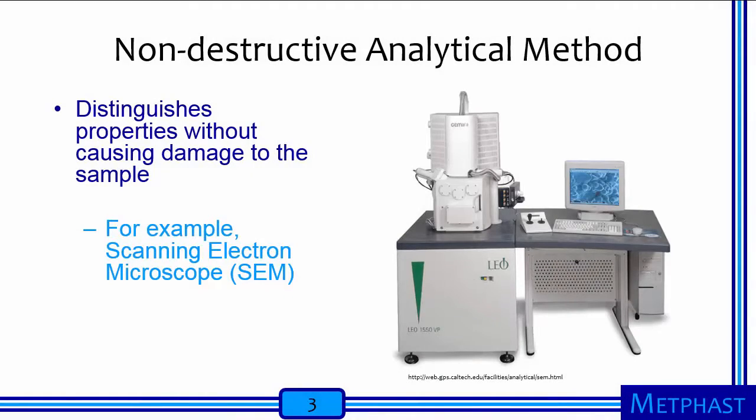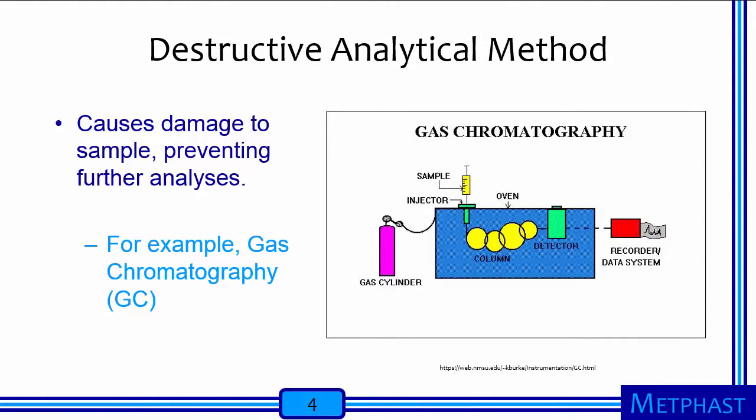The non-destructive method evaluates properties of the material without causing damage to it. An example of analytical equipment that uses non-destructive techniques is the scanning electron microscope, which produces images of the material during analysis. The destructive method, on the other hand, consumes the sample of material, preventing further analysis. An example is gas chromatography, which consumes the sample by heat in the attached oven and does not produce images of the sample.